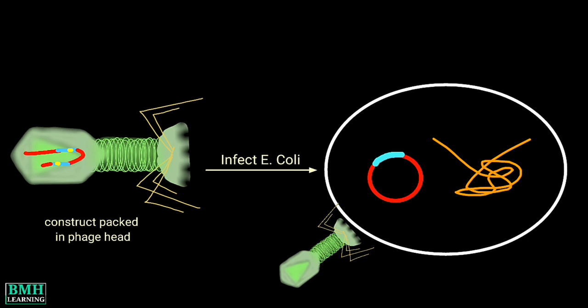After the entry into the host cell, the cosmid is maintained as plasmid. This was all, thanks for watching.